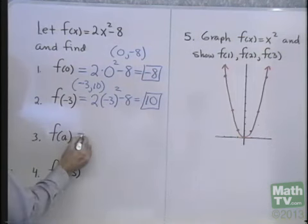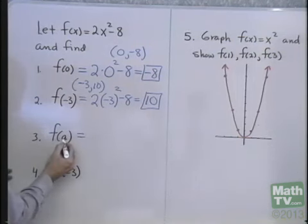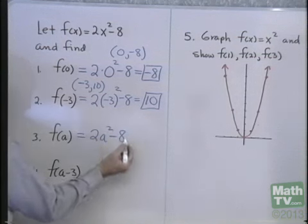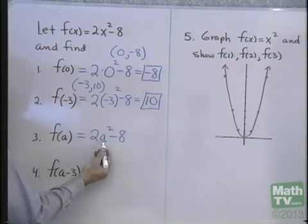Now, how about f(a)? Well, when x is equal to a, f(a) is 2a squared minus 8, and I can't simplify that until I know what a is.